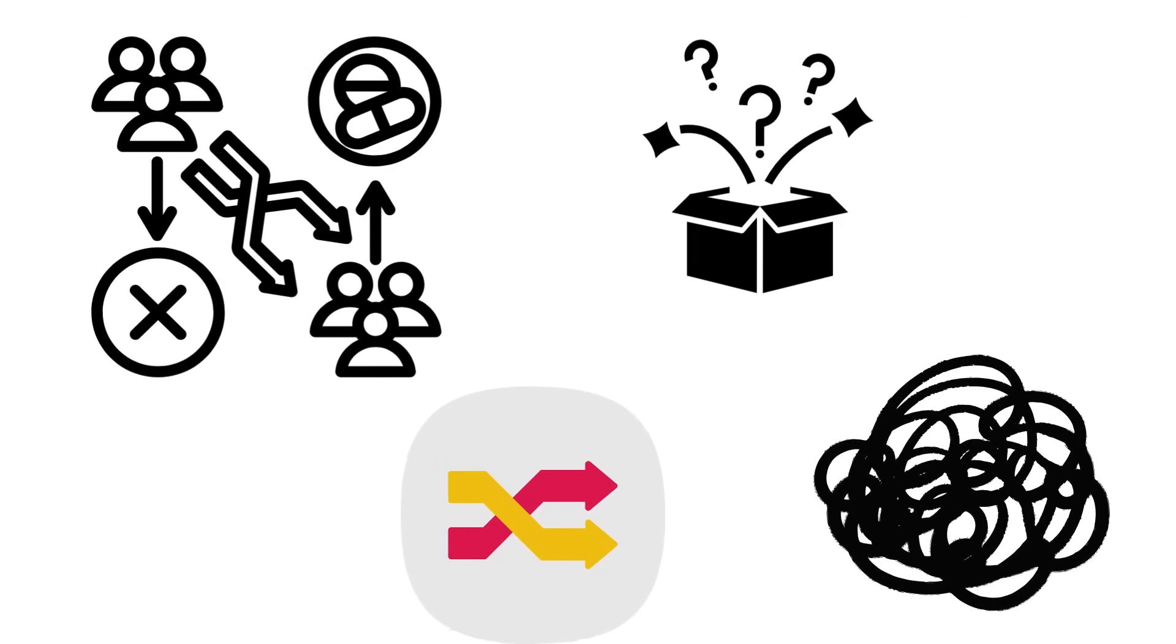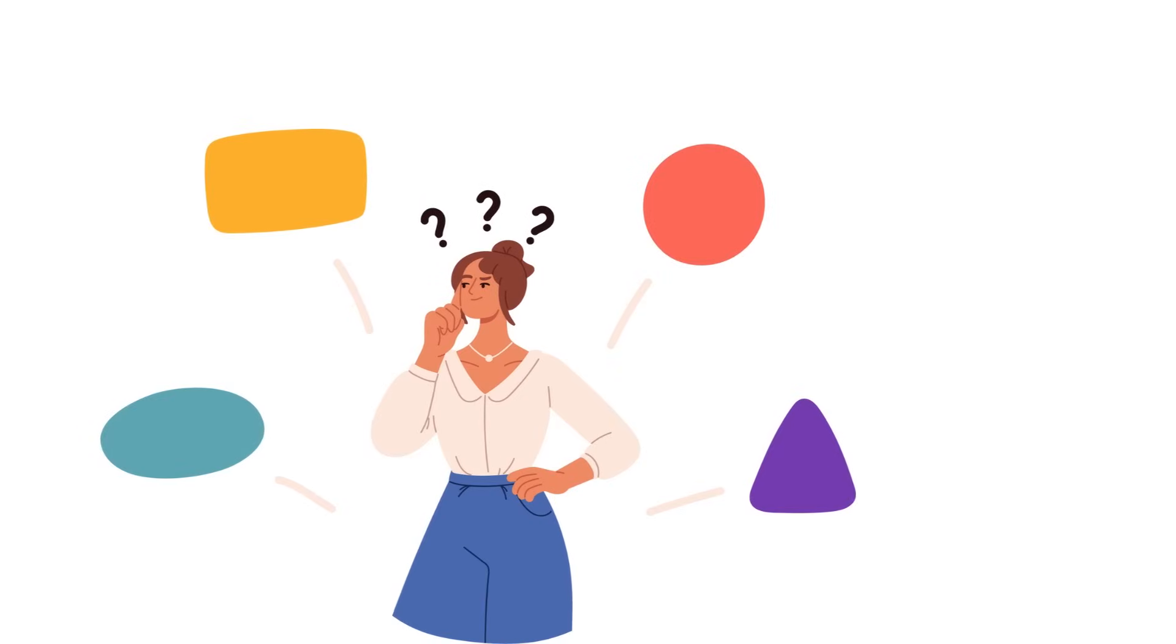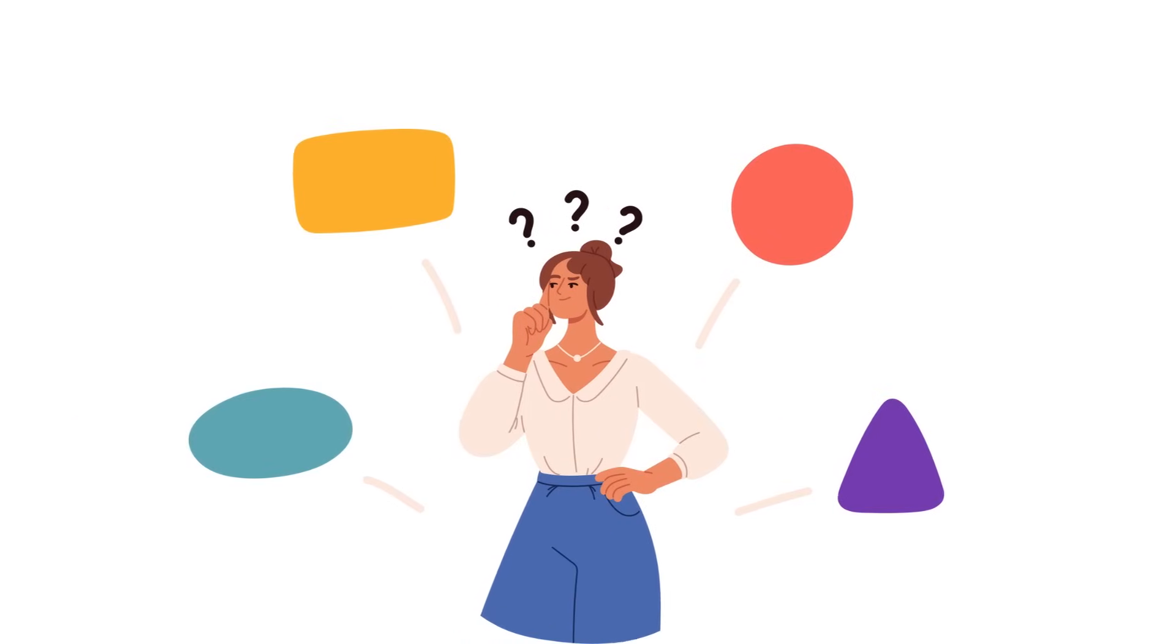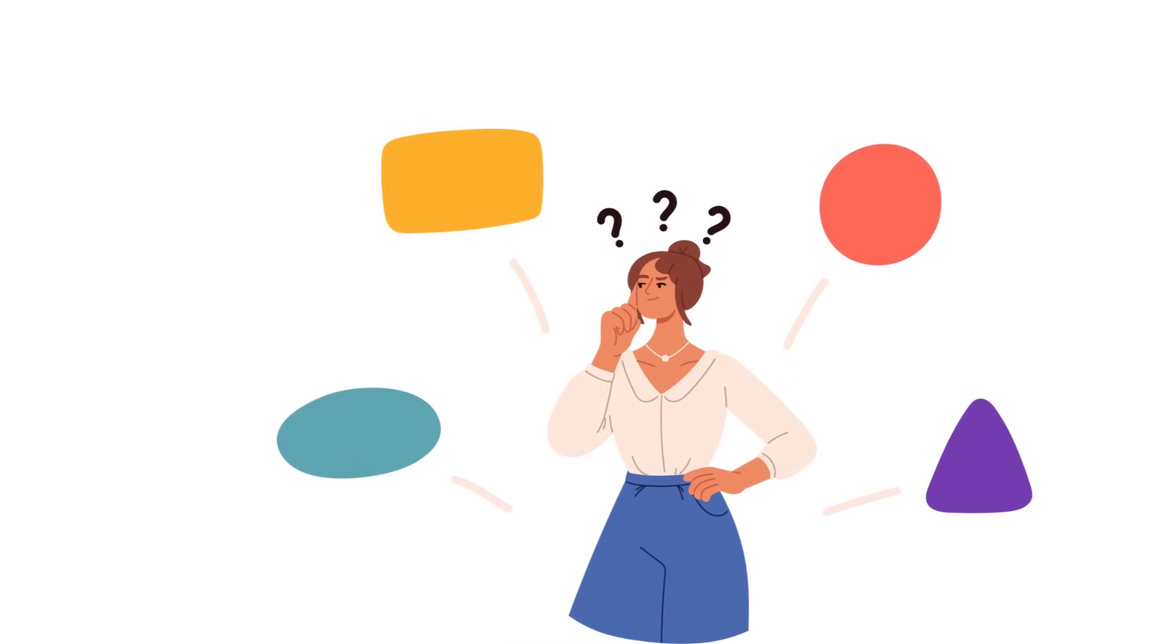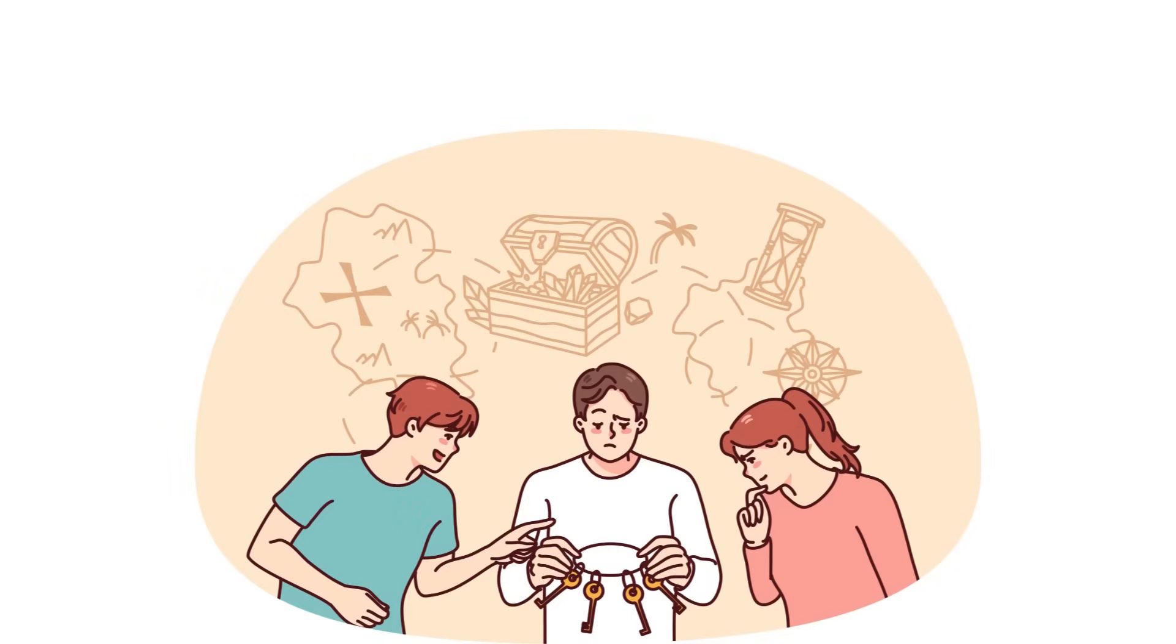Some argue that, even if our decisions are influenced by factors beyond our control, we still make choices based on our own reasons and motivations. But where do these reasons and motivations come from? They are themselves the products of our genes, experiences, and circumstances, none of which we chose.